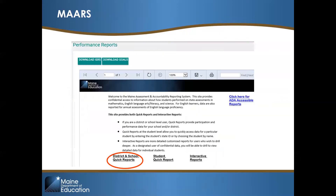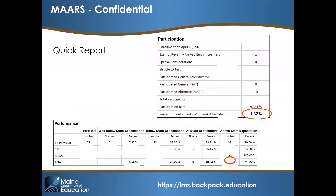Once you are in MARS, there are three options at the bottom of the page. This screenshot shows how to access different information. The district and schools report link found on the lower left portion of the page will provide district participation percentiles. Here you will see the number of students that participated in each assessment, the percentage of students in alternate assessments, and an overall participation rate. In this example, one student scored in the above state expectations level.